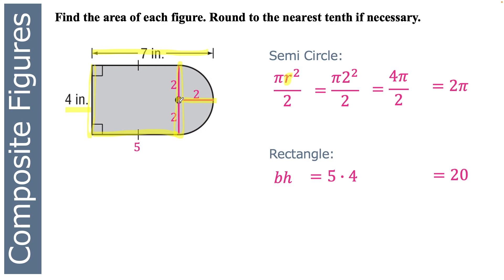So I found the area of the semicircle, I found the area of the rectangle, and to find the area of the whole composite figure, I just add them together. 2π plus 20. If you put that into your calculator, it's roughly 26.3 inches squared. Make sure you label your answers.